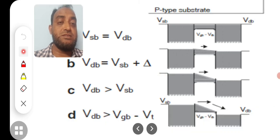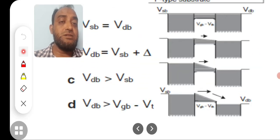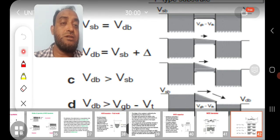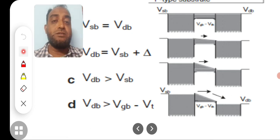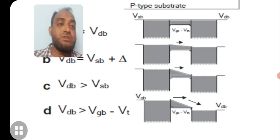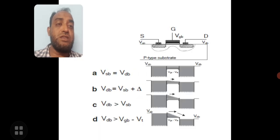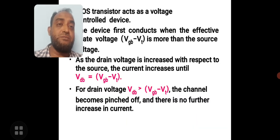Now the third case is Vdb is greater than Vgb minus Vt. This is called as saturation condition, where channel length modulation takes place, or we can simply call it as pinch off of the channel takes place. This is how using the fluid model we can explain the operation of a MOS transistor.